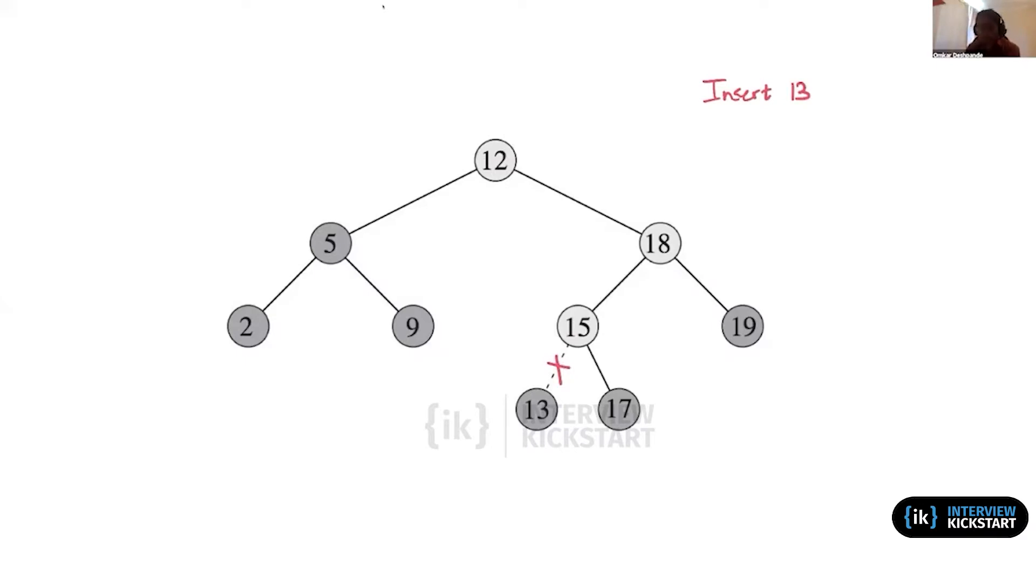Then we first do a search. We start from the root. 13 is more than 12, so we go down this path. 13 is less than 18, so we go down this path. 13 is less than 15, so we try to go down this path, and that's where we stop because we know 13 isn't there.